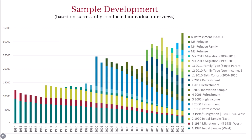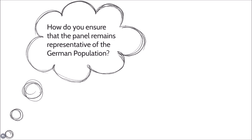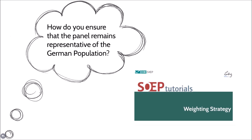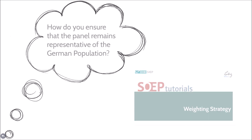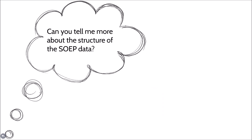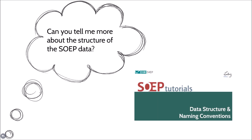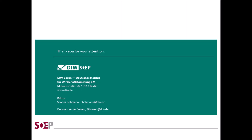We hope to have given you a better idea of the composition of the sample and how it has developed over time. If you want to find out more about how we keep the panel representative despite all these subsamples, you might want to watch the video on our weighting strategy. Or, if you want to see how the data is structured, you might want to continue with our data structure video. Thanks for watching!